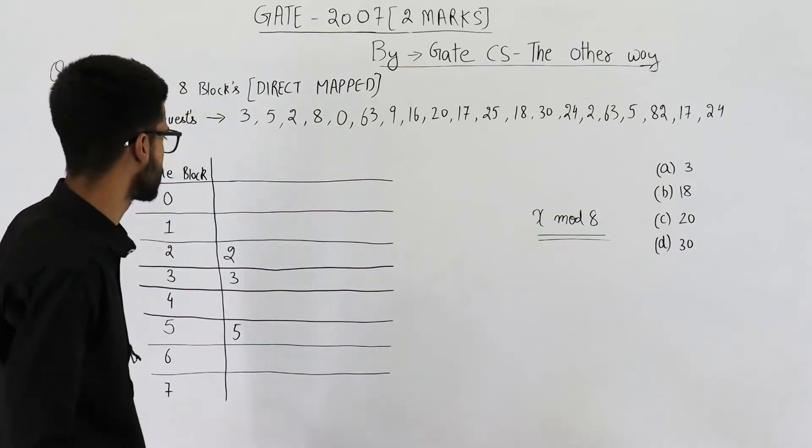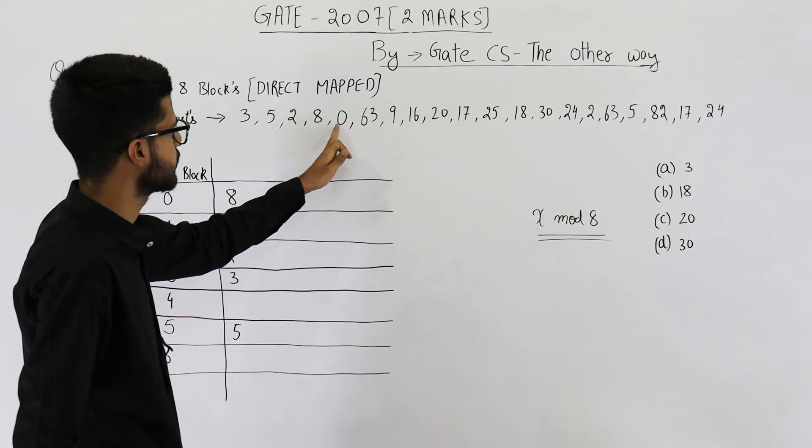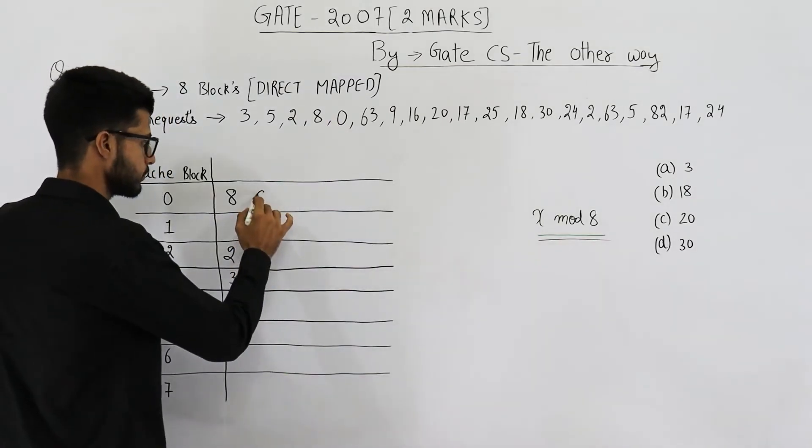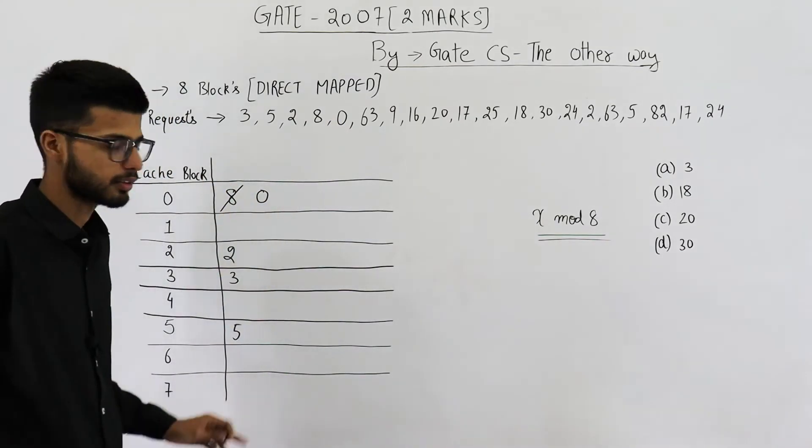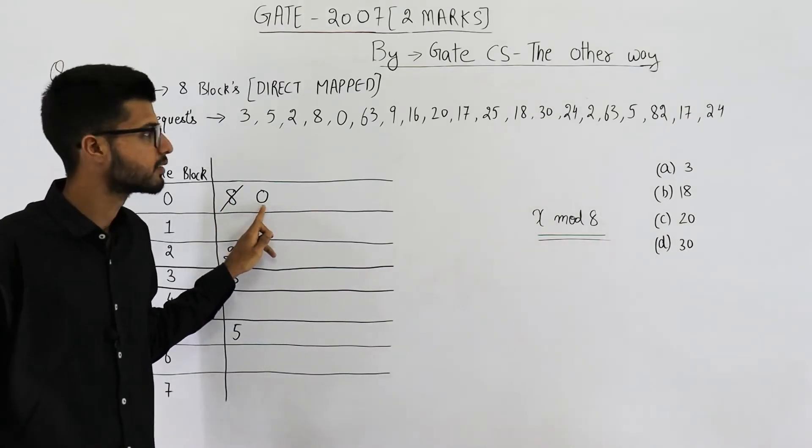Then you have 8, 8 mod 8 is 0. So it will go in cache block 0. Then you have 0, 0 mod 8 is also 0. So you replace this block and overwrite it with 0.